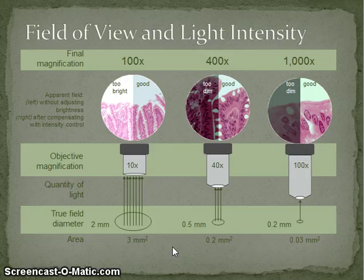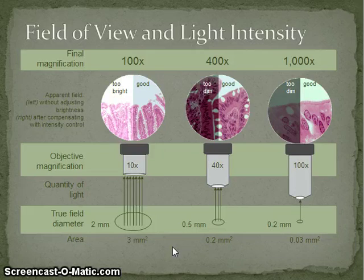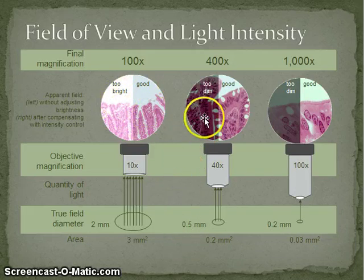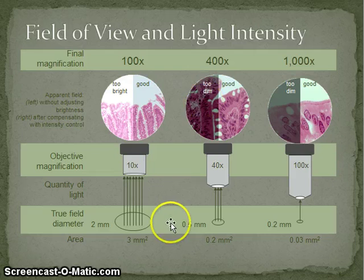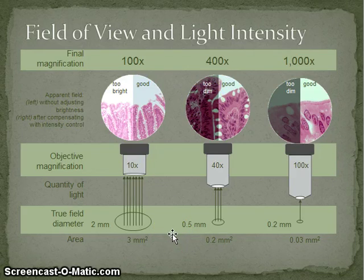Just a quick aside: it's very difficult to identify structures clearly if your lighting is not correct. Too bright is bad, very good is the middle setting, and too dim is also bad. If you don't have the right lighting, it's very difficult to calculate things correctly, so make sure that's sorted.